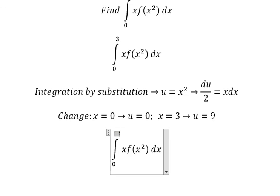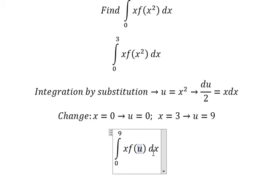So 3 will change to 9, x squared will change to u, and x dx we change to u over 2.